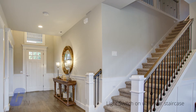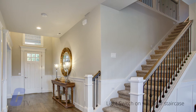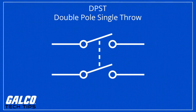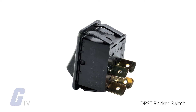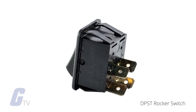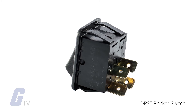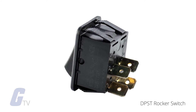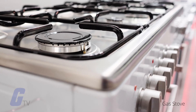The double pole, single throw or DPST consists of two poles, which essentially act as two switches arranged side by side. This switch is used to turn two circuits on and off and consists of four terminals.